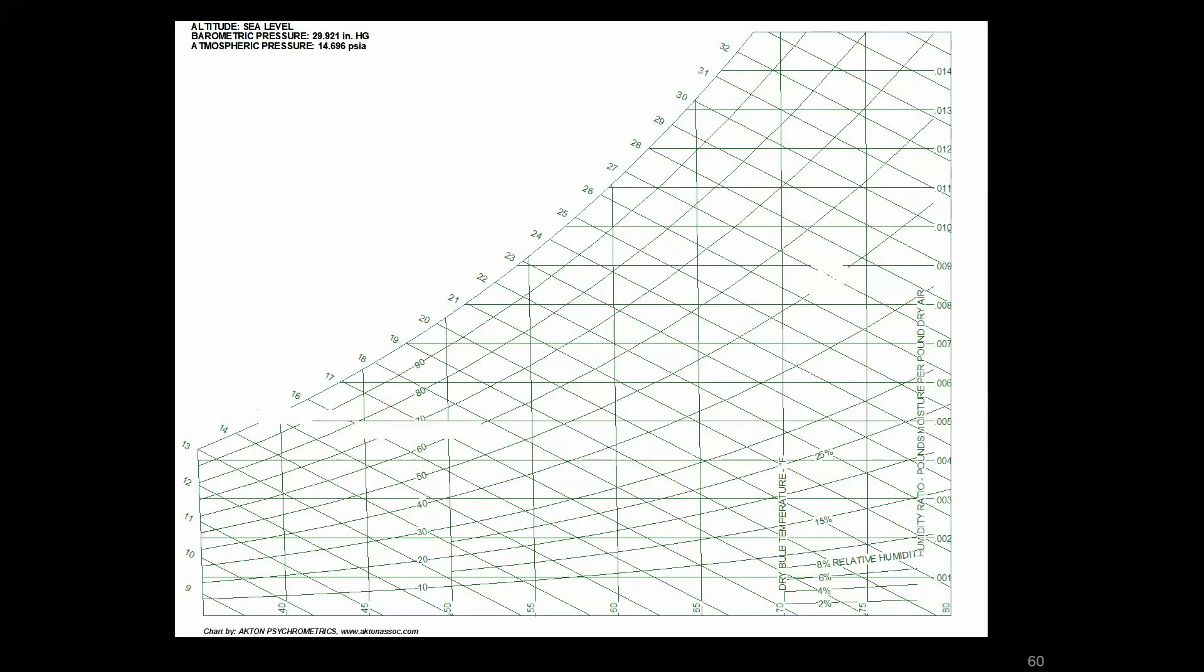So we just got done looking at how the psychrometric chart is put together, and now that we've seen how to plot states on the chart, we're going to look at what an HVAC process looks like on that chart.